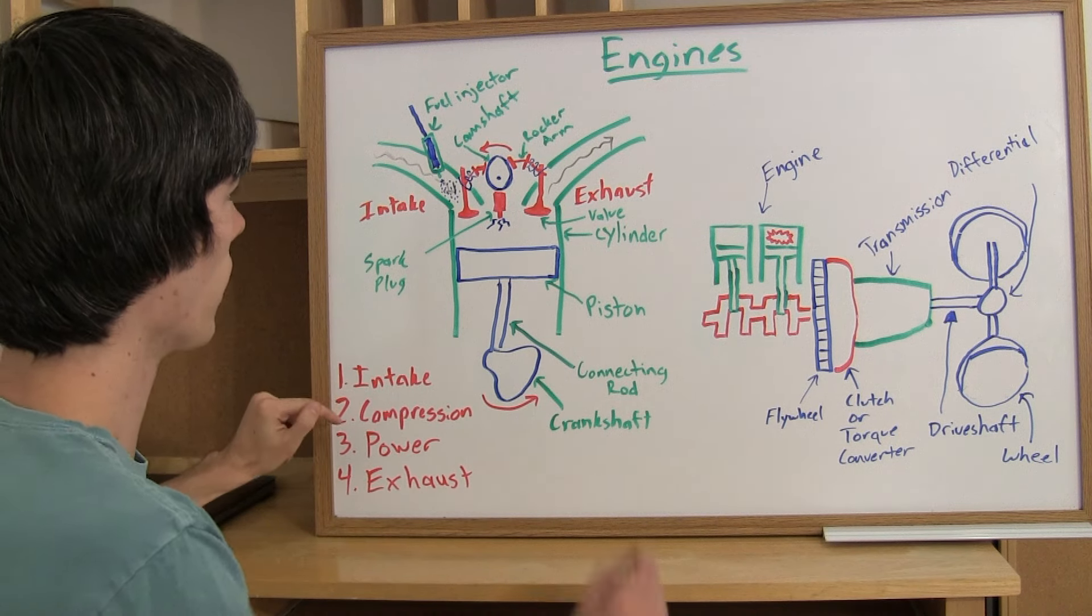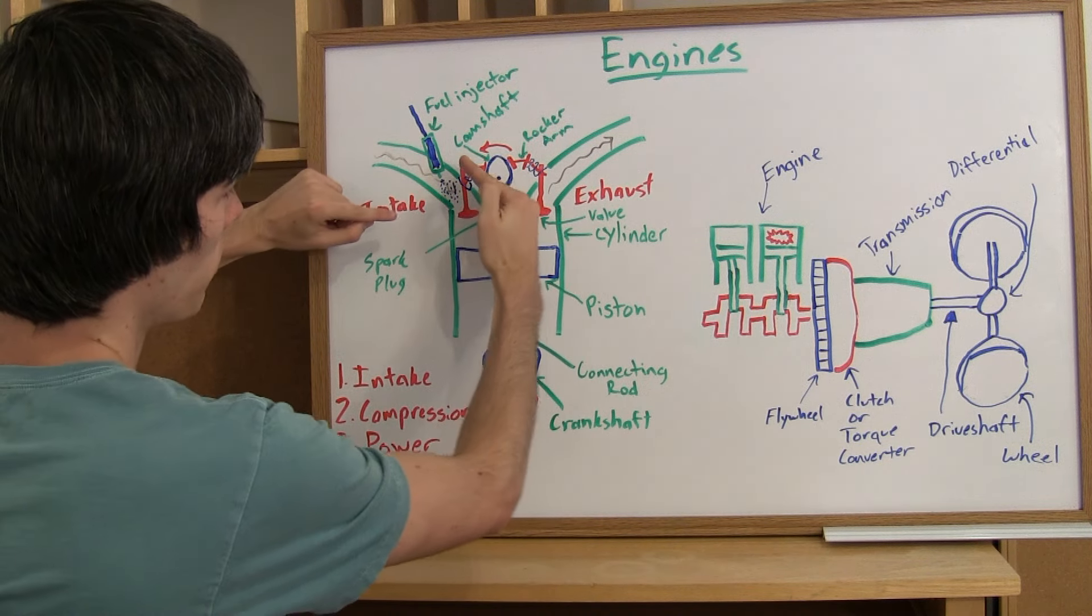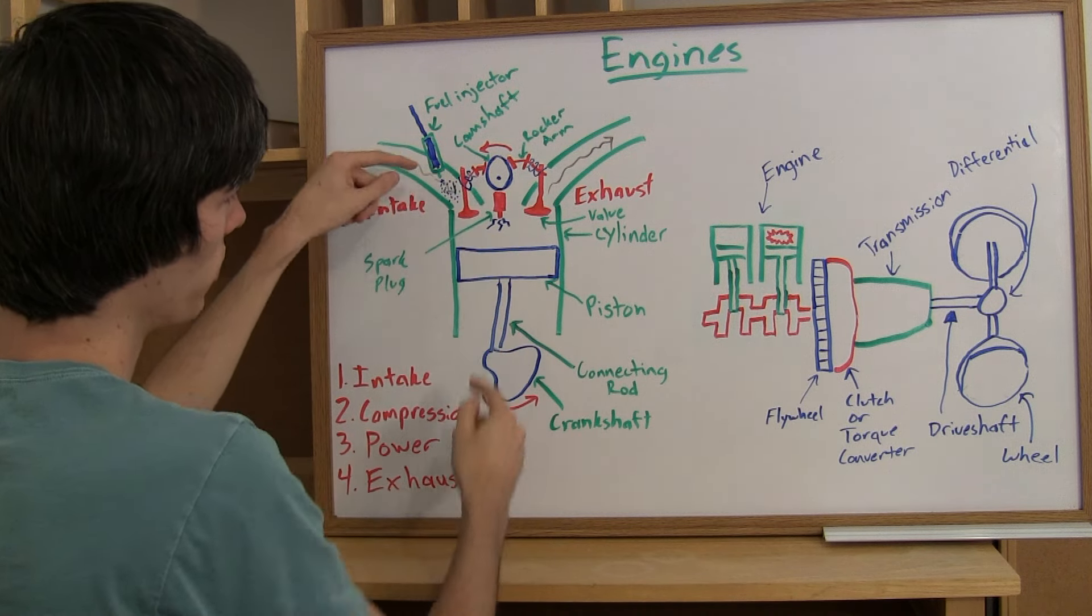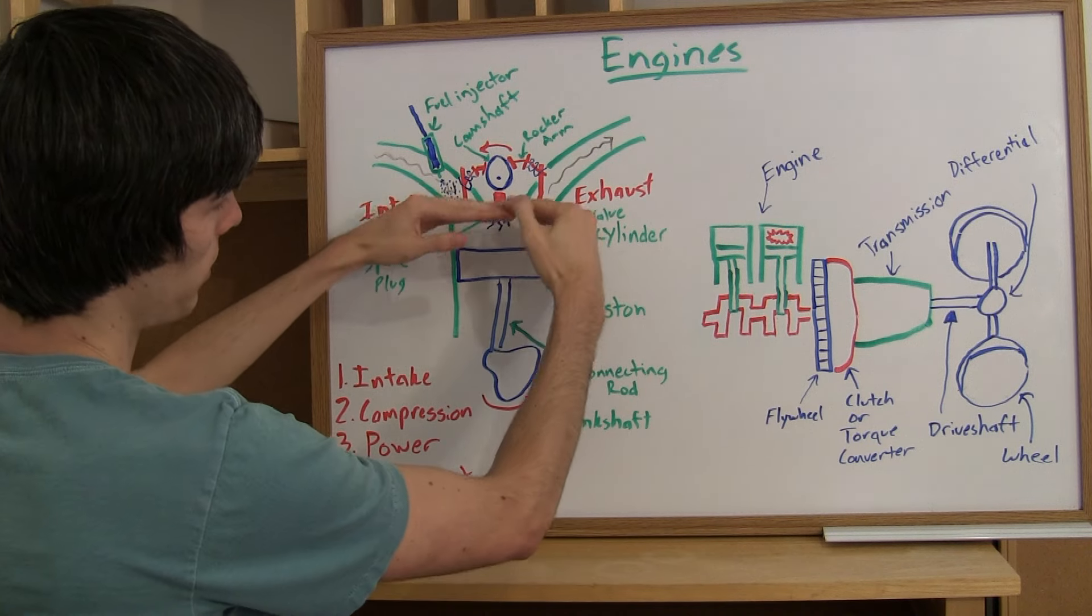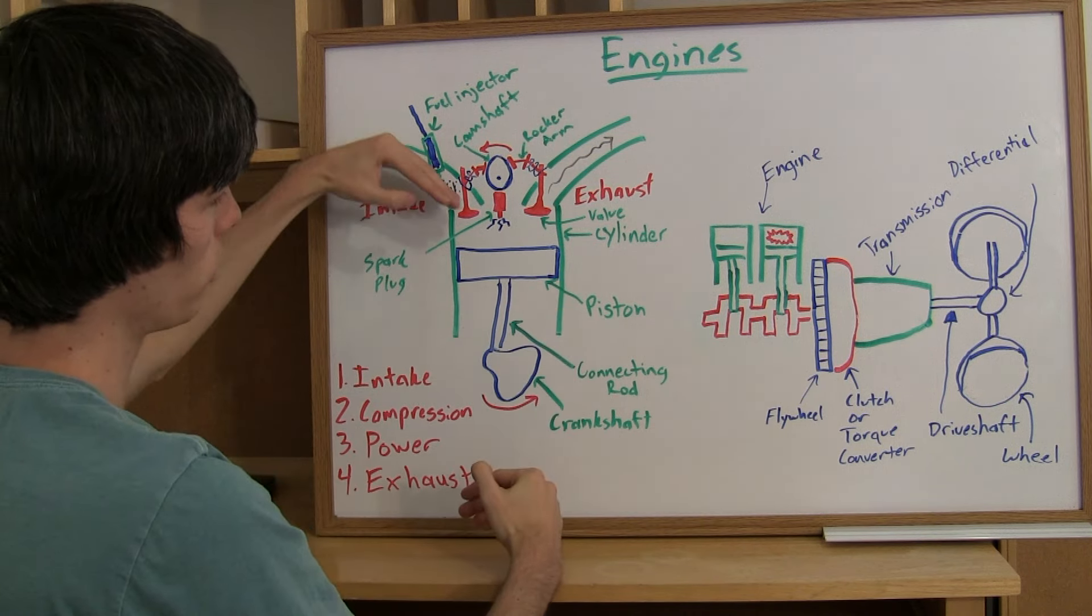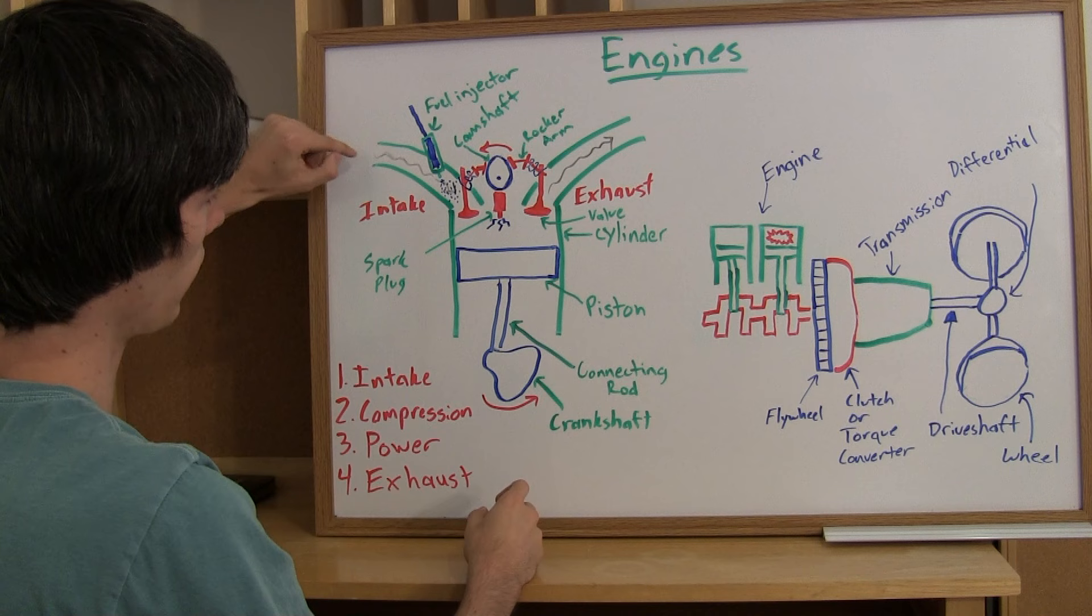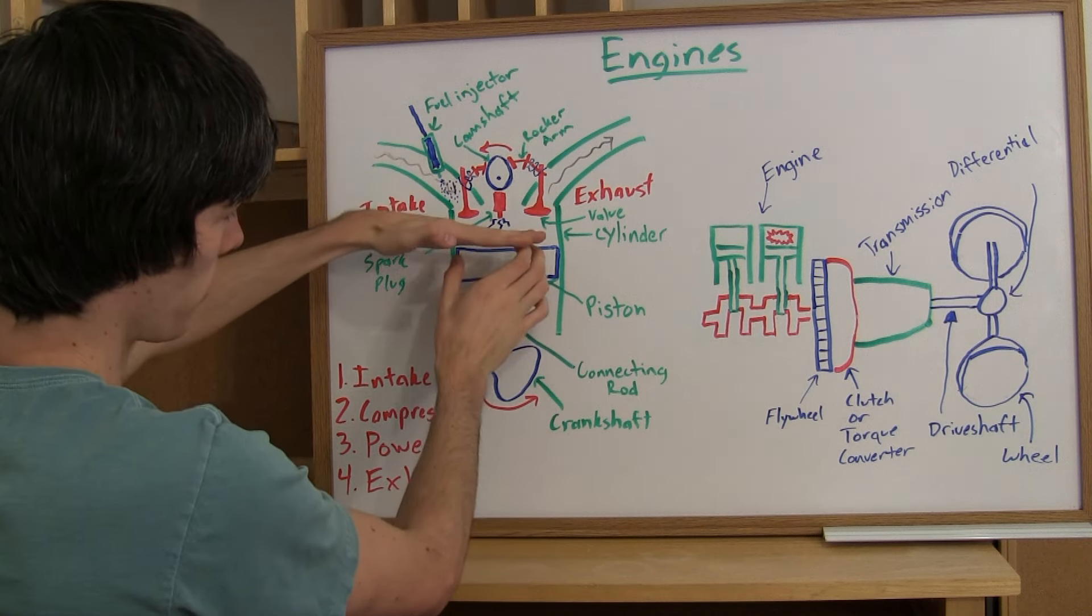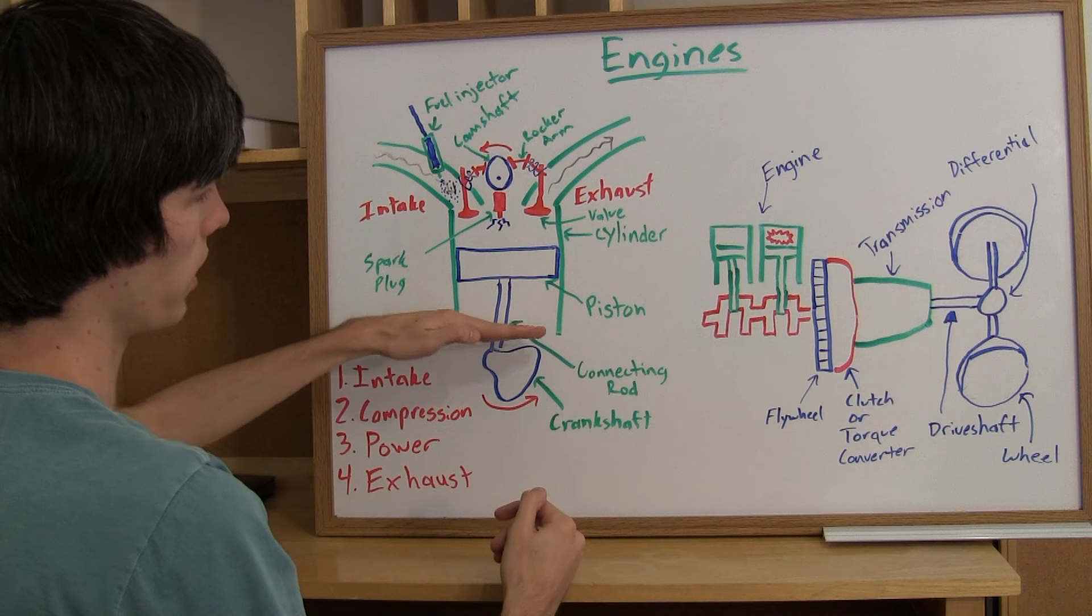So your first stroke is intake. So when you have your intake stroke this valve here, your exhaust, is going to be closed. This camshaft is going to be rotated enough so that this valve is pushed open. There's a little spring here that it compresses and opens this valve. When it's compressed, when that's pressed down, this piston is going to be at the top and it's going to be moving down. So as that piston moves down it's going to pull in an air fuel mixture into this cylinder. So that air fuel mixture comes from the fuel injector and then the air coming in from your intake. So that's going to be the first step is just pulling in that air fuel mixture into this cylinder chamber. So this piston will be all the way down here at the bottom.